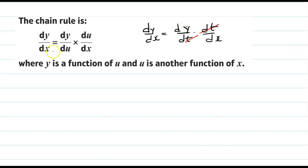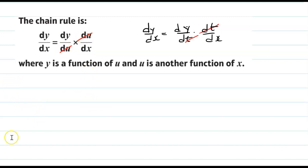Similarly, if you cancel du by du, you will get dy over dx. So what we are doing is multiplying by some number in the denominator and numerator. Let us see some questions now.